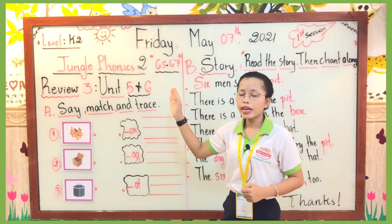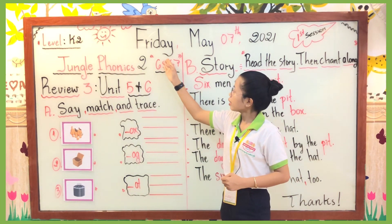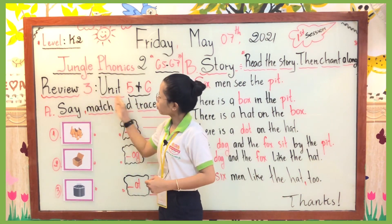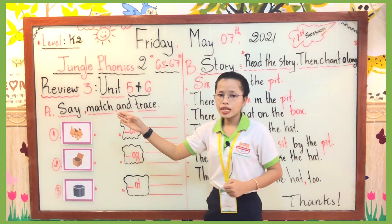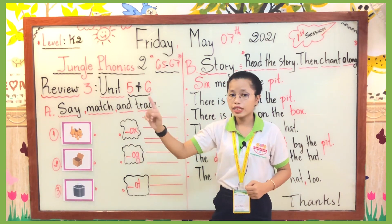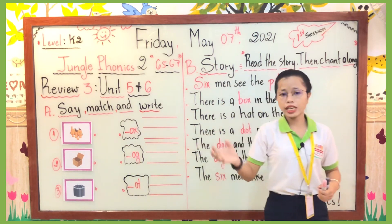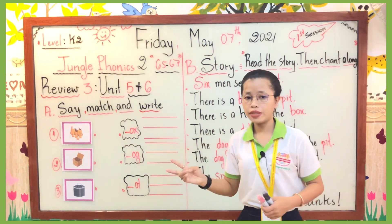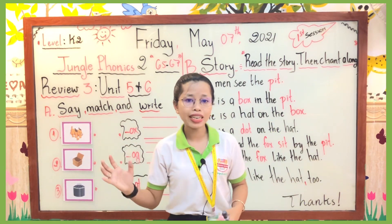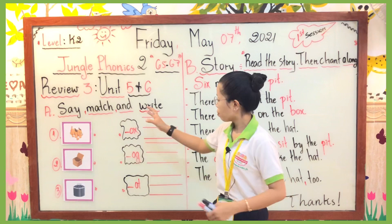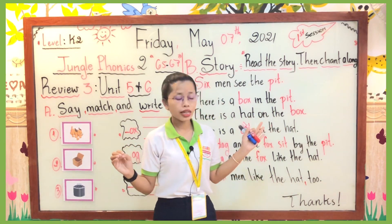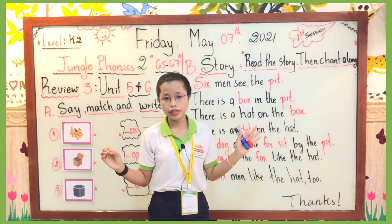Today we are going to practice activities in Jungle 22, pages 65 and 67, related to Review 3 covering Unit 5 and Unit 6. We have two activities: the first activity is Part A — the instruction is 'say, match, and rise.' The next activity, Part B, we are going to see and practice a story.